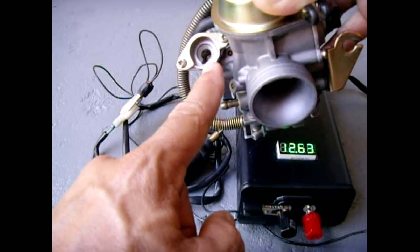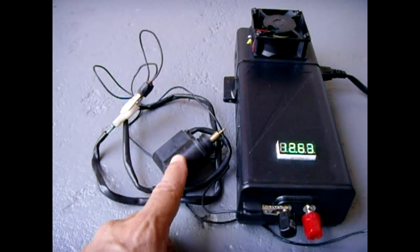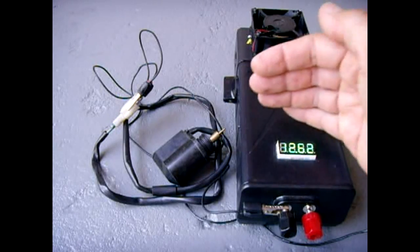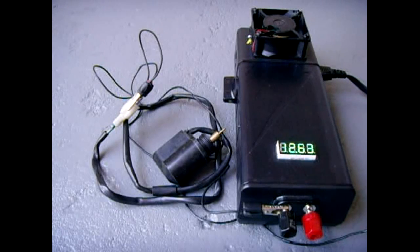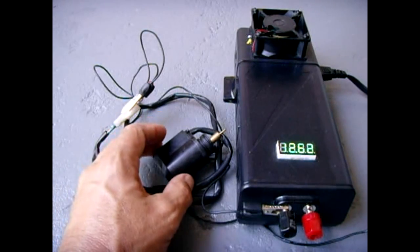So we're now going to take a look at the automatic choke and test it. Now to do the test, I have my power supply set at around 12.6 volts, which is right around the voltage of your battery when it's fully charged.